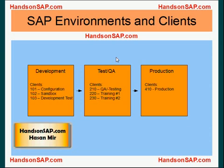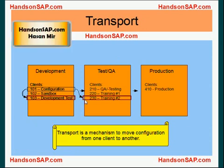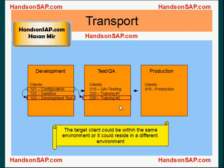Within the dev box we have multiple clients — usually a configuration sandbox and a development test client. In the test box we have a QA test client and some training clients, and in production we have one client called production. Transport is a mechanism to move configuration from one client to another. The target client could reside in the same environment — for example, the configuration client is the source and the configuration is being moved to the development test client, both residing in the same development box.